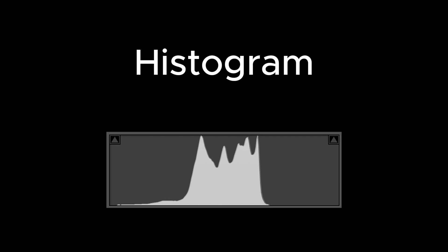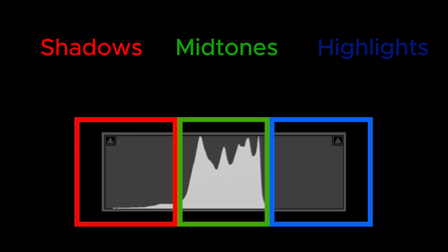This is a histogram. We can divide the histogram into three parts: shadows, midtones, and highlights.